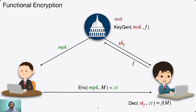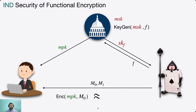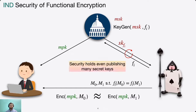The security of a Functional Encryption scheme is defined in two models. The first is the indistinguishable security model. In this model, the adversary submits two challenge messages M0 and M1, and cannot distinguish between encryptions of M0 and M1, given that all queried functional secret keys skf satisfy fi(M0) = fi(M1). If the number of secret keys is a priori bounded, we call the scheme bounded collision resistant; if the adversary can submit any polynomial number of secret key queries, we call it unbounded collision resistant.